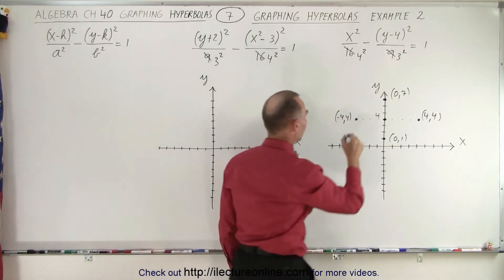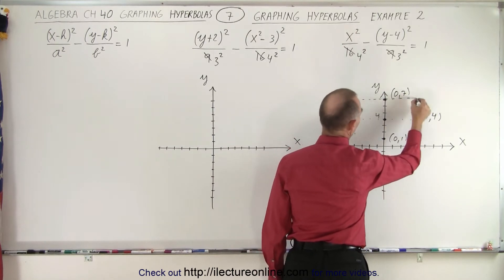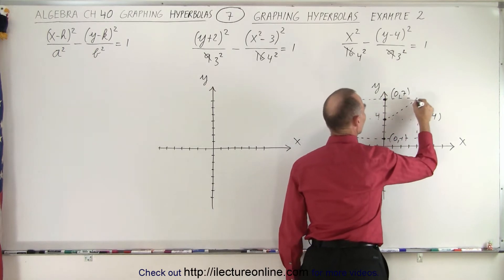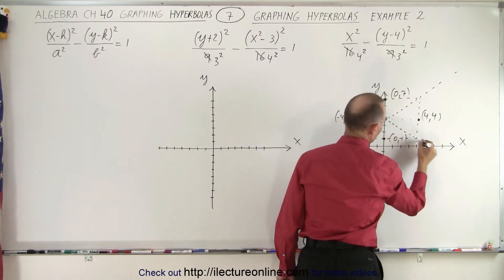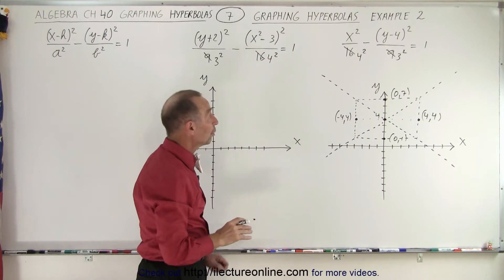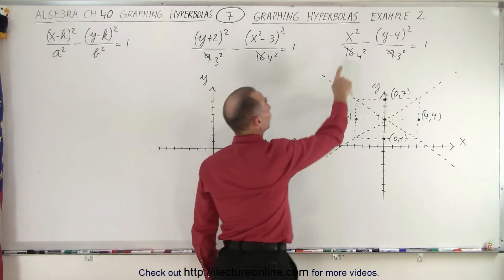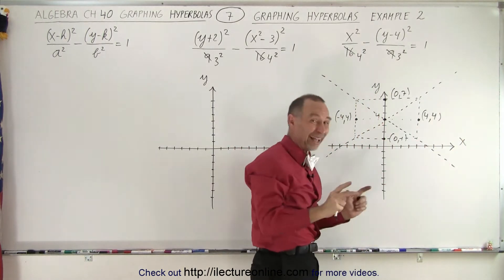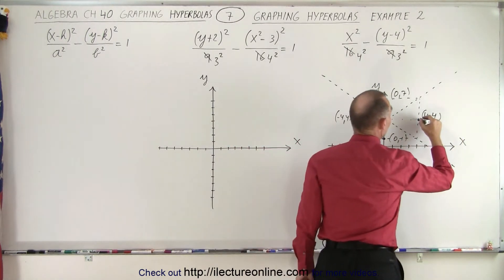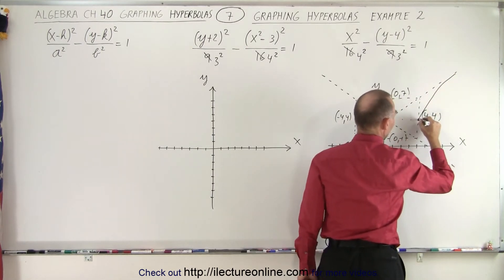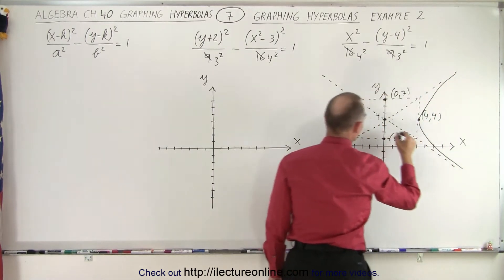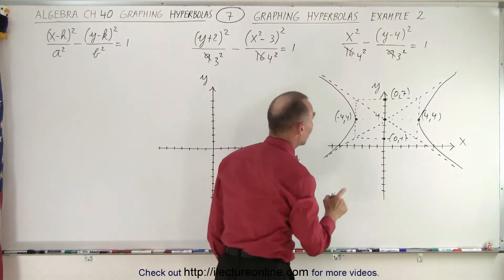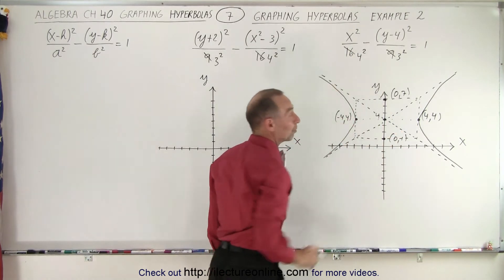Now we can draw the box, so the box is going to look like this. We can then draw the diagonal lines — the diagonal lines are going to go right through the corners. Now we need to know if it opens upward, downward, or sideways. Since the x term is positive, we know that it opens sideways. So the hyperbola will look like this, opening sideways. There's our hyperbola, which opens sideways because the x term is positive.